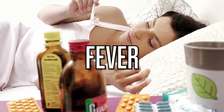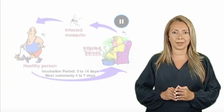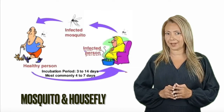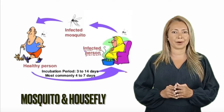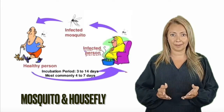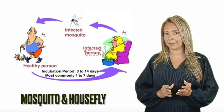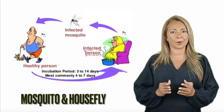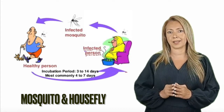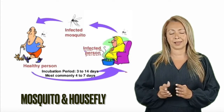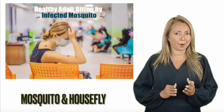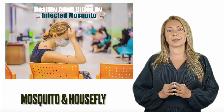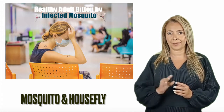Body temperatures vary from person to person and at different times of the day. The average temperature has traditionally been defined as 98.6 degrees Fahrenheit or 37 degrees centigrade. Our body temperature goes up when we exercise, babies cry, and we start feeling hot and sweaty when we get excited or angry. This is because our body's metabolic rate is increased. An oral temperature of 100 degrees Fahrenheit or 37.8 degrees centigrade or higher is generally considered a fever.